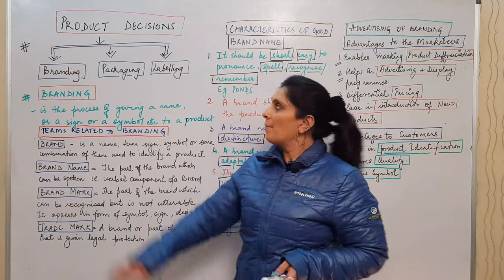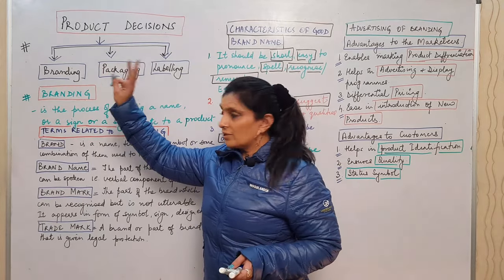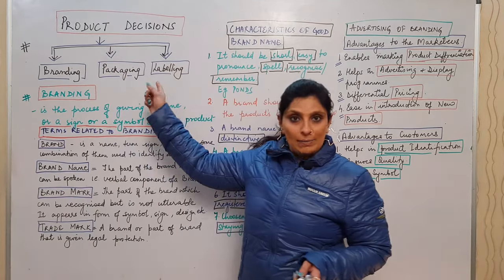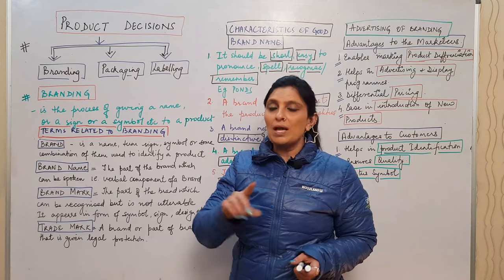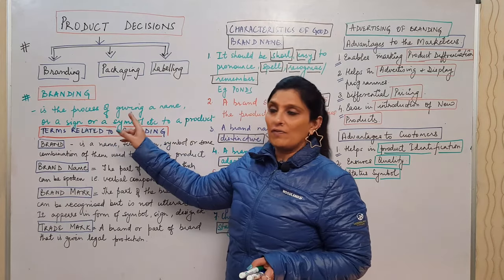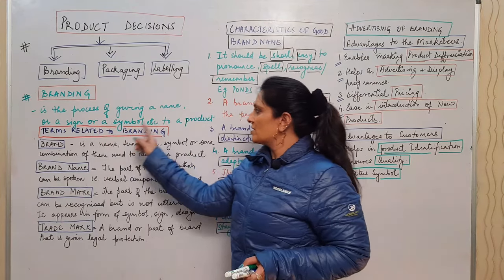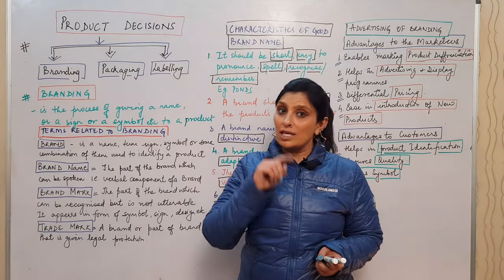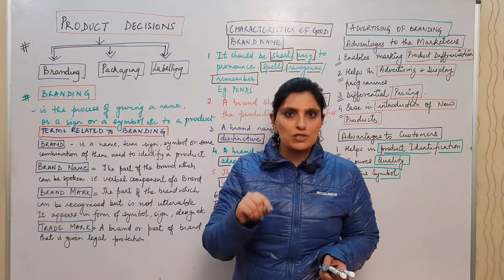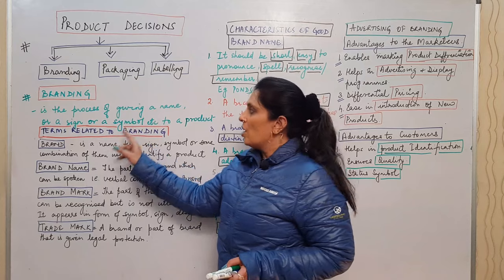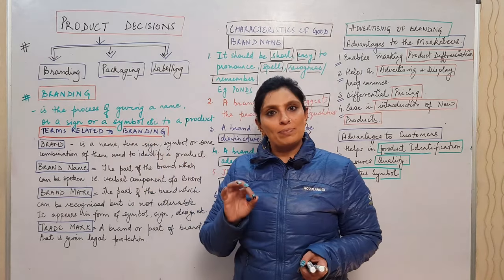The three product-related decisions are branding, packaging, and labeling. First we're discussing branding. Branding is the process of giving a name, sign, or symbol to a product. This we have also covered when we did the functions of marketing.